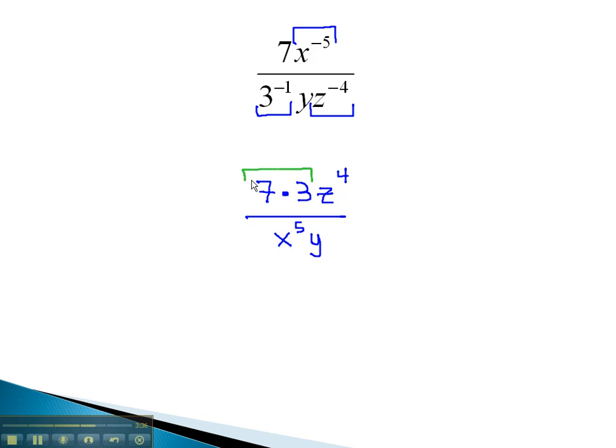Finally, we can simplify by multiplying the numbers to get 21z to the 4th over x to the 5th y.